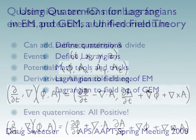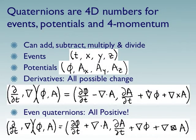And then the variation on that previous Lagrangian needed in order to derive the field equations for GEM. So what is a quaternion? Well, quaternions are a four-dimensional number, useful for events, for potentials, and for four-momentums.